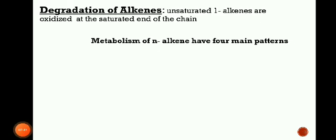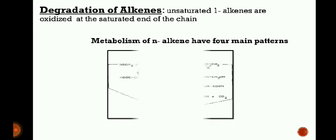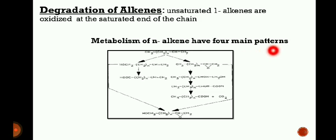Now the degradation of alkenes. Alkenes are oxidized at the saturated and unsaturated ends of the chain. Branching in general reduces the rate of biodegradation; methyl side groups do not drastically decrease the biodegradability, whereas complex branching like the tertiary butyl group causes hindrance of the degradative enzymes. Here is a figure showing the metabolism of an alkene with four main patterns: oxygenase attack on a terminal methyl group to produce a corresponding alcohol; subterminal oxygenase attack to produce an alkene-ol with a hydroxyl group at a non-terminal carbon; oxidation across the double bond to give an epoxide; and oxidation across the double bond to produce a diol.